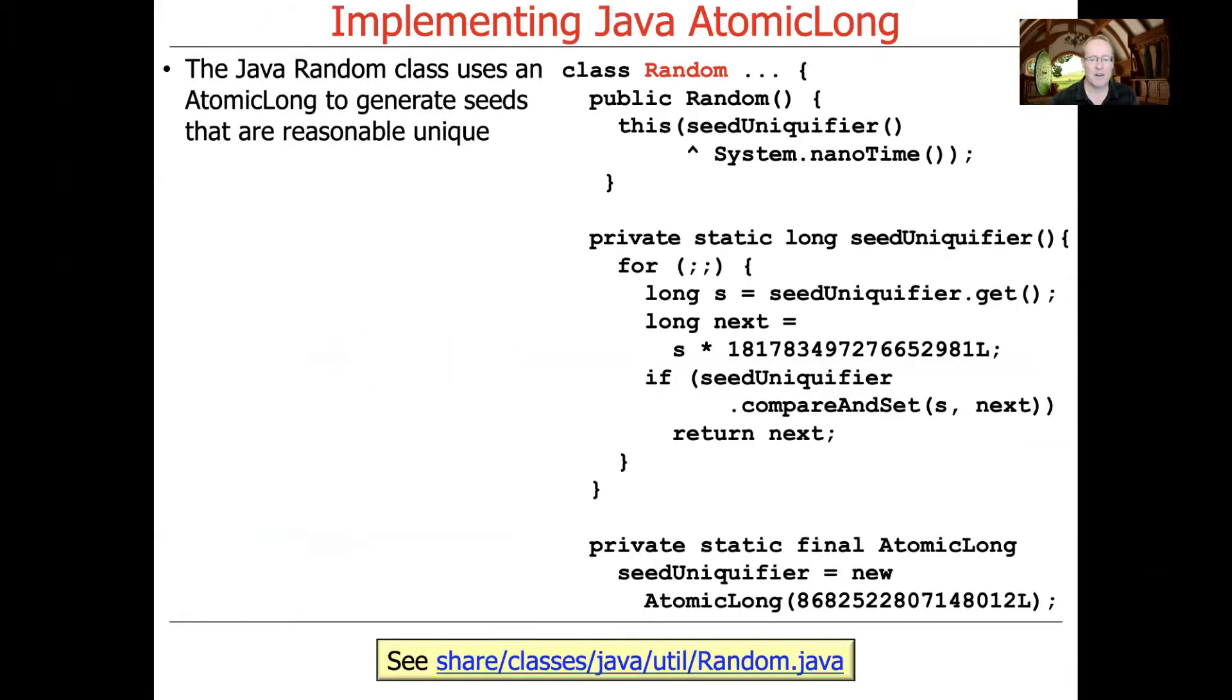And this example is kind of a fun example. So what we're going to do here is we're going to show you a little snippet of code from the Java class library. This is the Java Random class. And as you might expect, the Java Random class is used to generate random numbers.